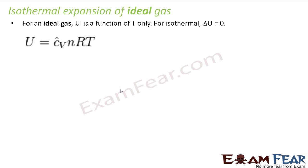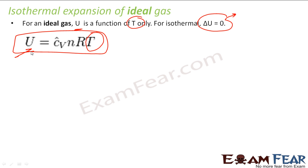How is work done for isothermal expansion of an ideal gas? Delta U is zero. Why? Because internal energy is a function of T. This is something we discussed earlier. The formula — internal energy is C_V times RT — so the only variable is T. If T is constant, delta U will be zero.